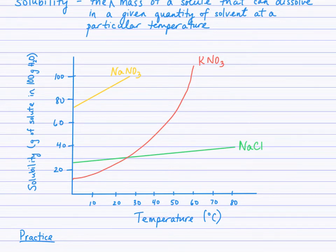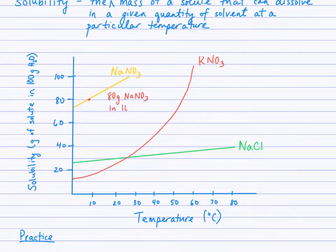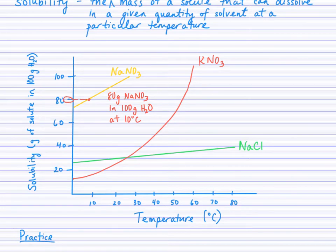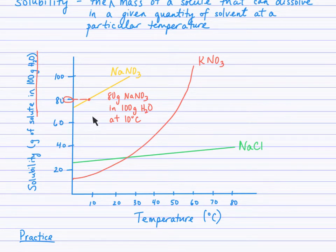For example, if we look at 80 grams of NaNO₃ in 100 grams of water at 10 degrees Celsius. According to this solubility curve — the yellow line — we can see that 80 grams of solute in 100 grams of water, because we're right on that yellow curve, will dissolve at 10 degrees Celsius. Come right down to 10 degrees Celsius — this is the solubility of sodium nitrate in 100 grams of water at 10 degrees Celsius.